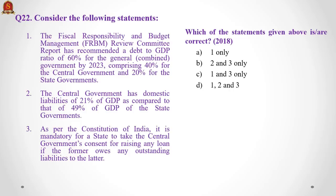Question 22: the FRBM review committee report recommended a debt-to-GDP ratio of 60% for the general government by 2023, comprising 40% for the central government and 20% for state governments. Statement 2 says the central government has domestic liabilities of 21% of GDP compared to 49% for state governments. Statement 3 says as per the Constitution of India, it is mandatory for a state to take the central government's consent for raising any loan if the state owes outstanding liabilities to the central government — this is a very logical statement, not requiring consent at all times but only when liabilities are owed.